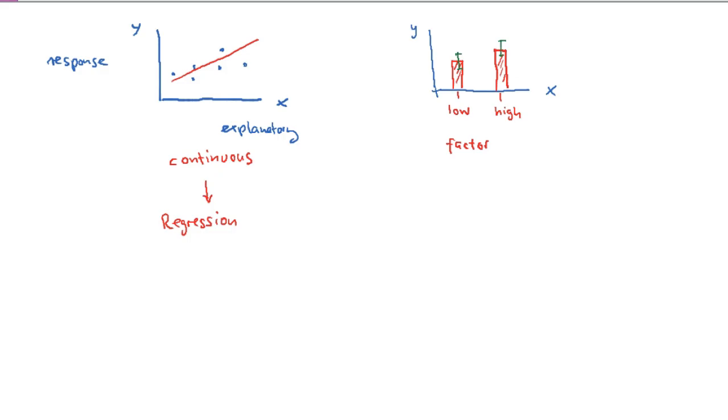Now what type of model are you going to use when the explanatory variable is a factor? Well, here is what you usually would call an analysis of variance or ANOVA.